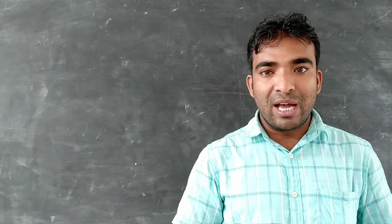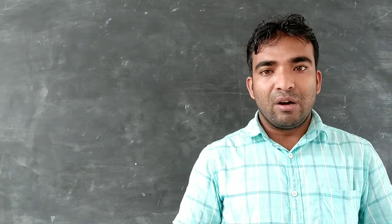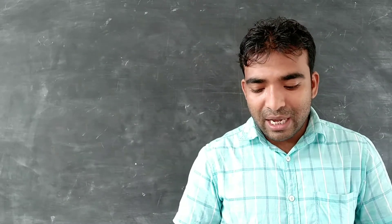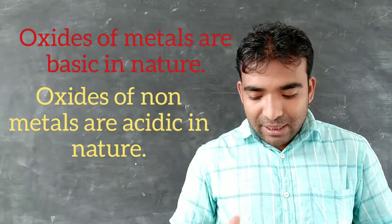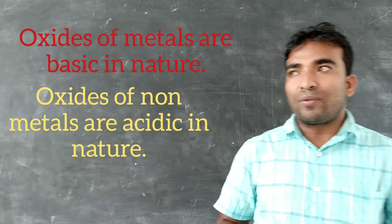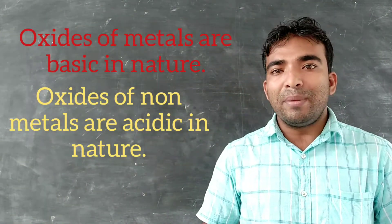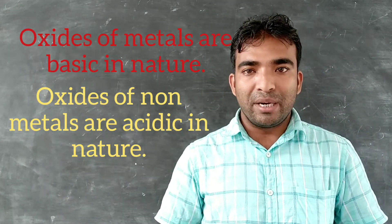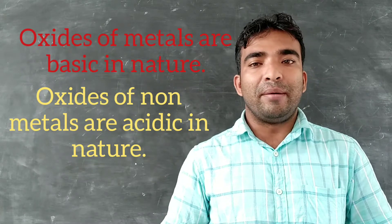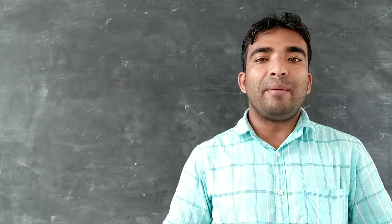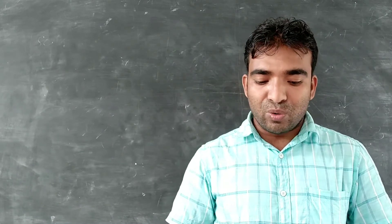Now we discuss the chemical properties. The first is the reaction with oxygen. When metals react with oxygen, they produce metal oxides, and these oxides are basic in nature. On the other hand, when non-metals react with oxygen, they produce oxides that are acidic in nature. So, oxides of metals are basic and oxides of non-metals are acidic.